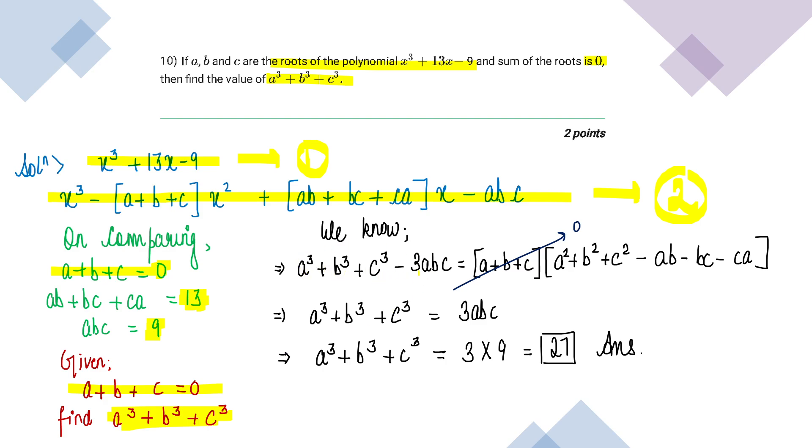Forget about this term, because abc is 0. So the final answer of this question will be 3 into 9 and that is 27.